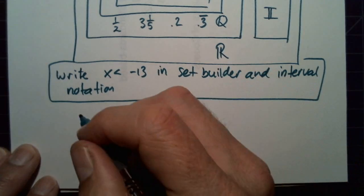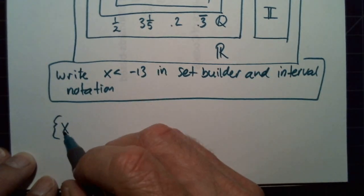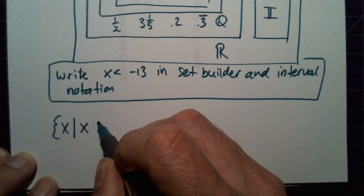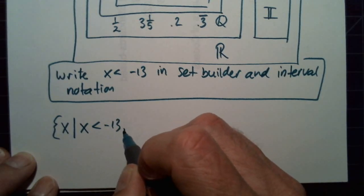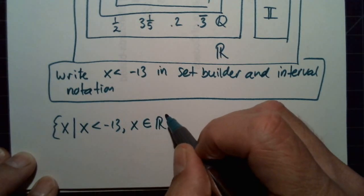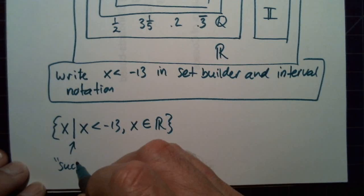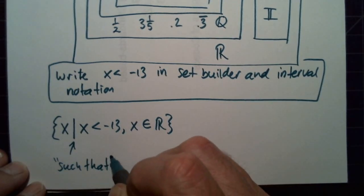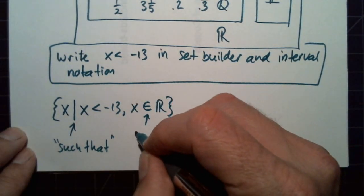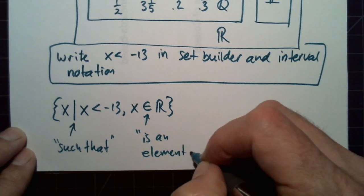Set builder notation goes like this: we're going to have all the numbers x such that x is less than negative 13 and x is an element of the real numbers. Remember you say 'such that' and 'is an element of.'